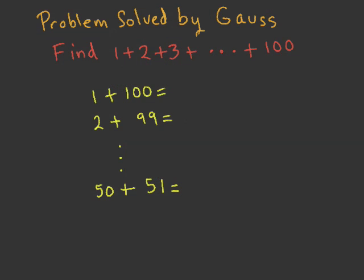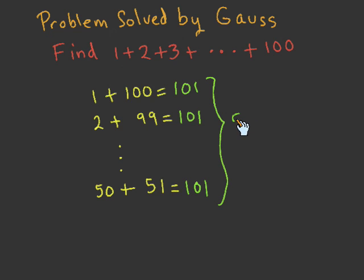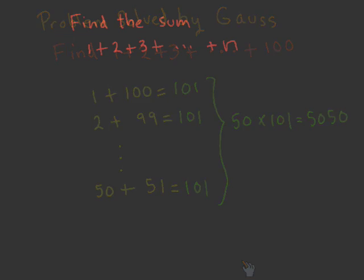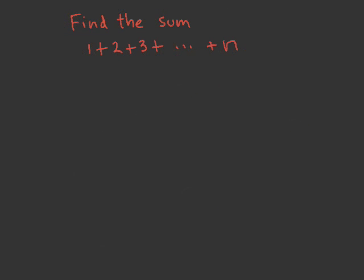In the prior lecture, we showed how Gauss solved the problem of finding the sum 1 plus 2 plus 3 up to 100. In Gauss's solution, we reduced the problem of finding the sum of different natural numbers to the problem of finding the sum of 50 equal numbers. A natural generalization of this result is to find the sum 1 plus 2 plus 3 up to n — the sum of the first n natural numbers.